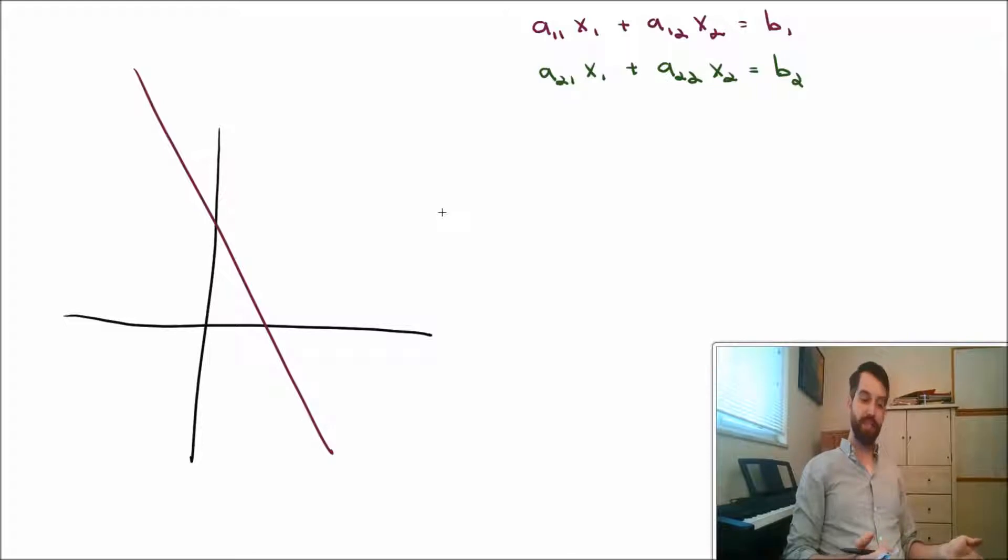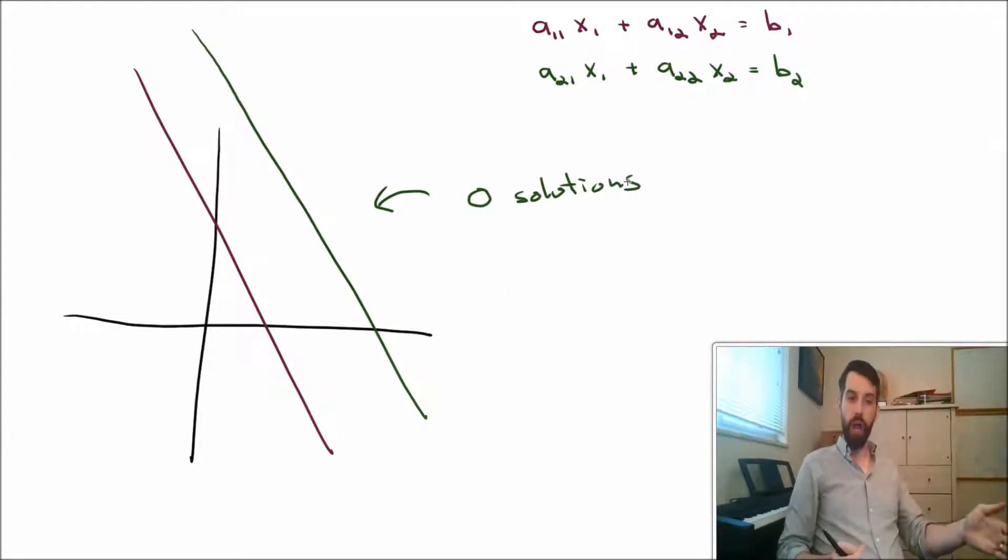I'm trying to think about other ways I could draw this. Another one is I can imagine that my two lines were exactly parallel. So there's one, and there's a second one. In this scenario, we're going to have zero solutions. Every point is either on one line or the other line, but never on both.